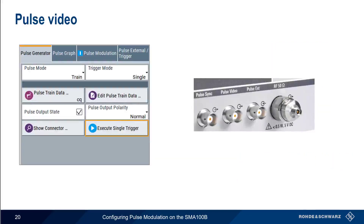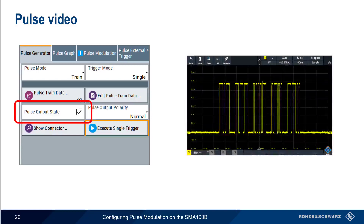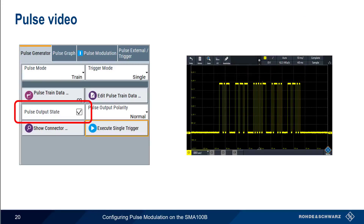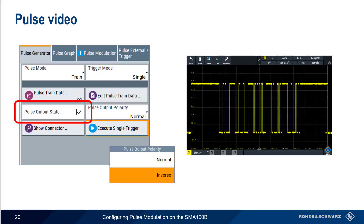Now that we've discussed external triggers, let's discuss Pulse Video. When Pulse Output State is enabled, the Pulse Video connector outputs the internal pulse generator signal – in other words, a replica of the pulsed RF signal. If we connect the Pulse Video connector to an oscilloscope and generate a pulse train, we can clearly see the same signal as shown on the pulse graph. We can also change the Pulse Output Polarity from Normal to Inverse so that the output at the Pulse Video connector has reverse polarity – that is, video voltage is high when RF is low. Remember that what appears at the Pulse Video connector is essentially a copy of what's being generated by the SMA's RF output.